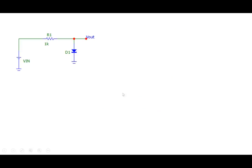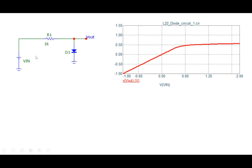Let's start with a very simple circuit. We have a diode and a resistor in series. When we apply a voltage, we would like to know the relationship between Vout and Vin. Vout versus Vin will follow a characteristics like this.